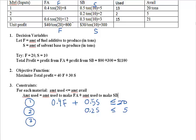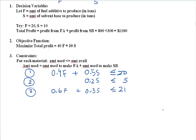For material 3: 0.6F plus 0.3S less than or equal to 21. So these are the constraints from the limited materials. Now there is one more constraint we need to specify. We need to tell the computer that we cannot make negative amounts of the products. You and I know you can't make negative amounts of anything, but the computer doesn't know that. So we add explicit non-negativity constraints: F greater than or equal to 0, and S greater than or equal to 0. By convention, we combine these and write: F, S greater than or equal to 0.